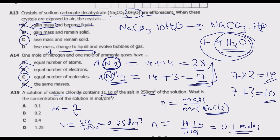Now substituting into the molarity formula: concentration = 0.1 ÷ 0.25 = 0.4 mol/dm³. So C is the correct answer. Please join me in the next episode — the fourth and last episode of the multiple choice section — where we cover questions 16 through 20.